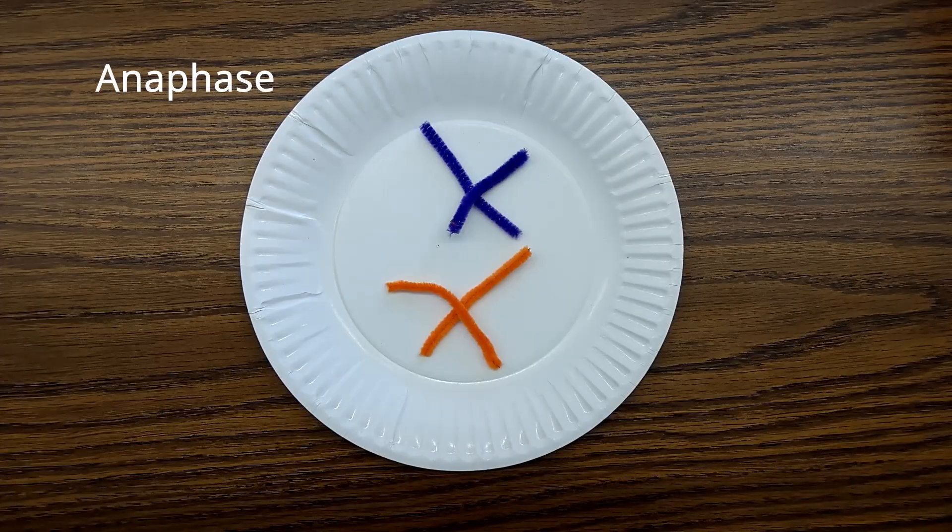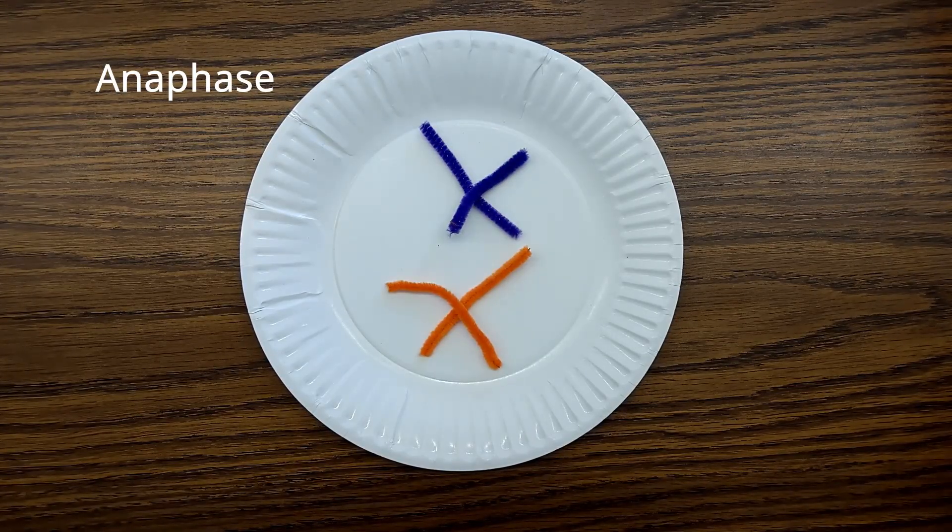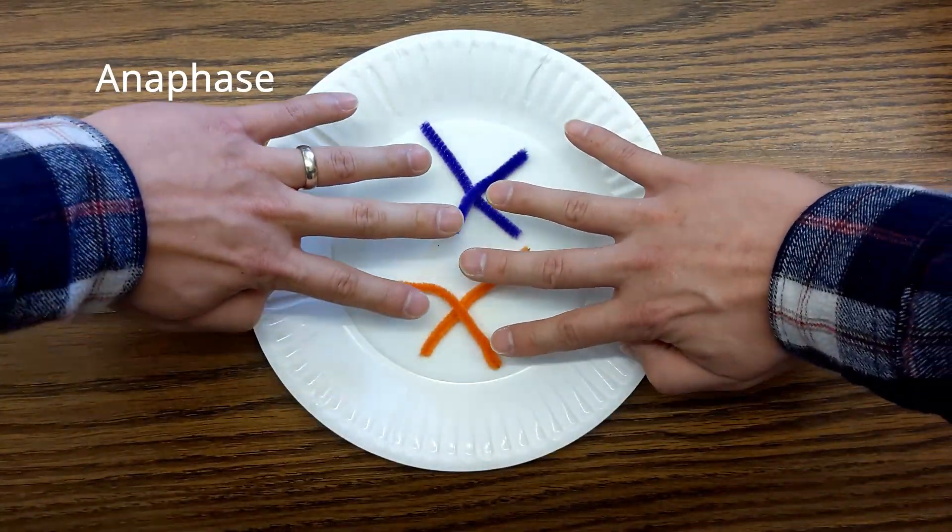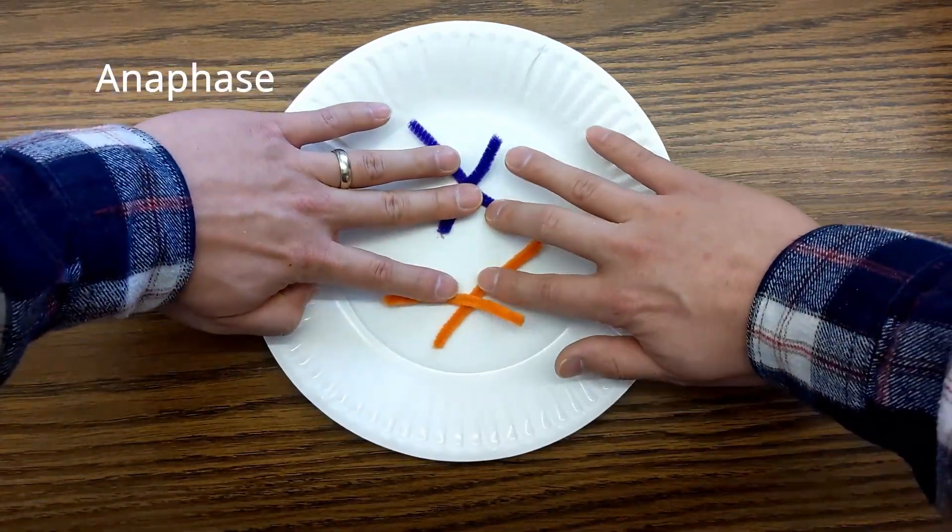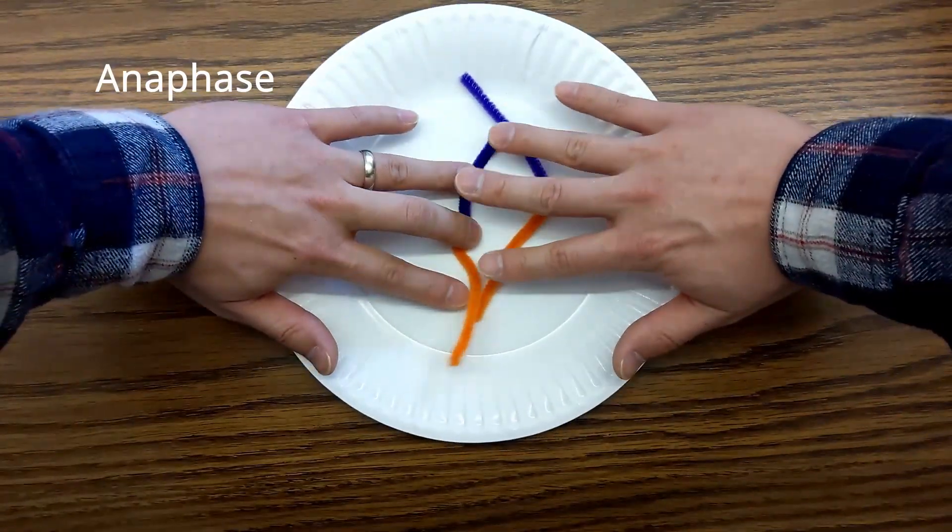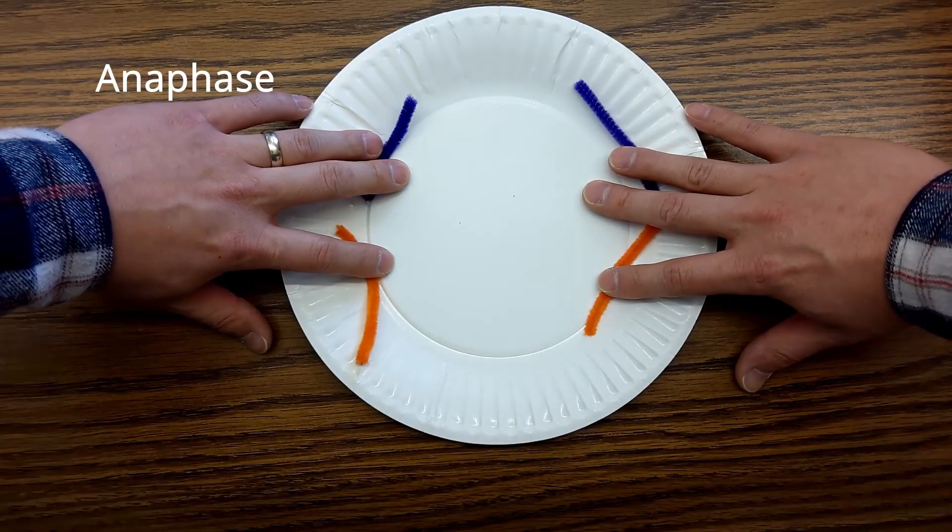After metaphase, anaphase takes place. The copies of DNA are separated and go to each opposite end of the cell. My fingers are like spindle fibers—they're going to pull on these individual chromosomes and separate them.